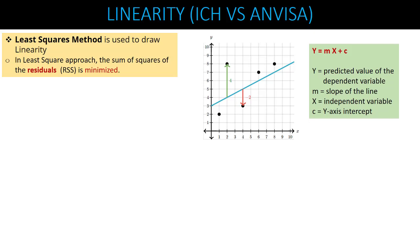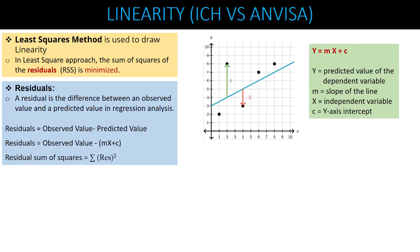In the least squares approach, the sum of squares of residuals is minimized. You draw a linearity line through your five different concentration levels such that there are minimum residuals across all concentrations. A residual is the difference between an observed value and a predicted value in a regression analysis. Your observed values may lie exactly on the line or deviate from it.